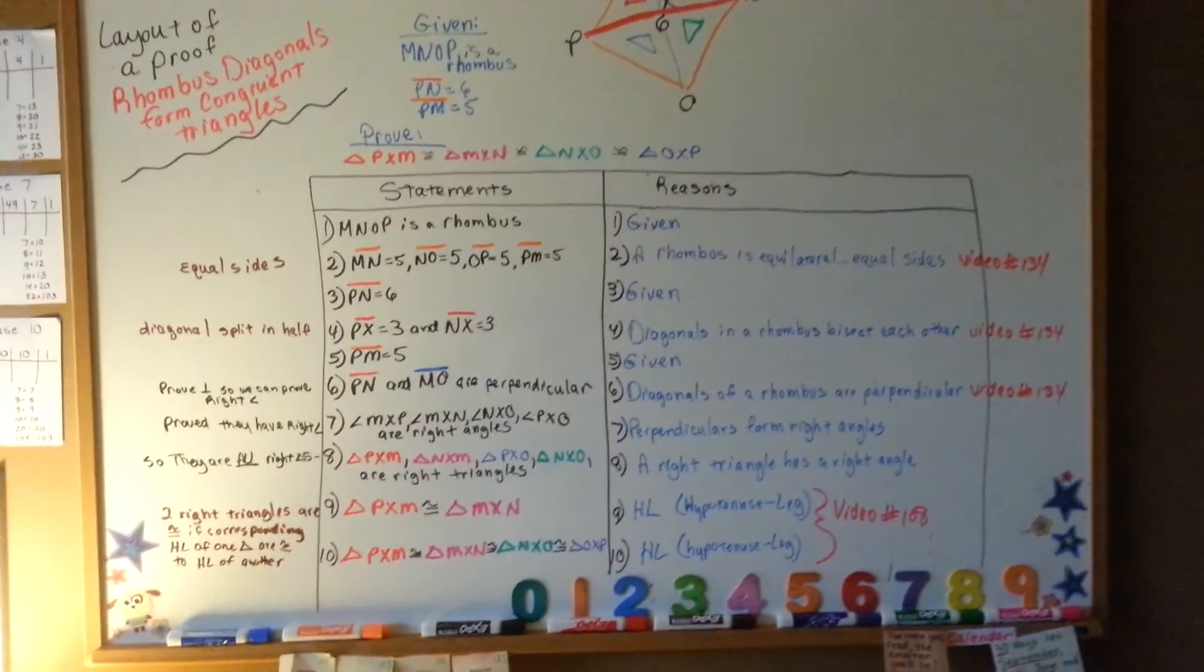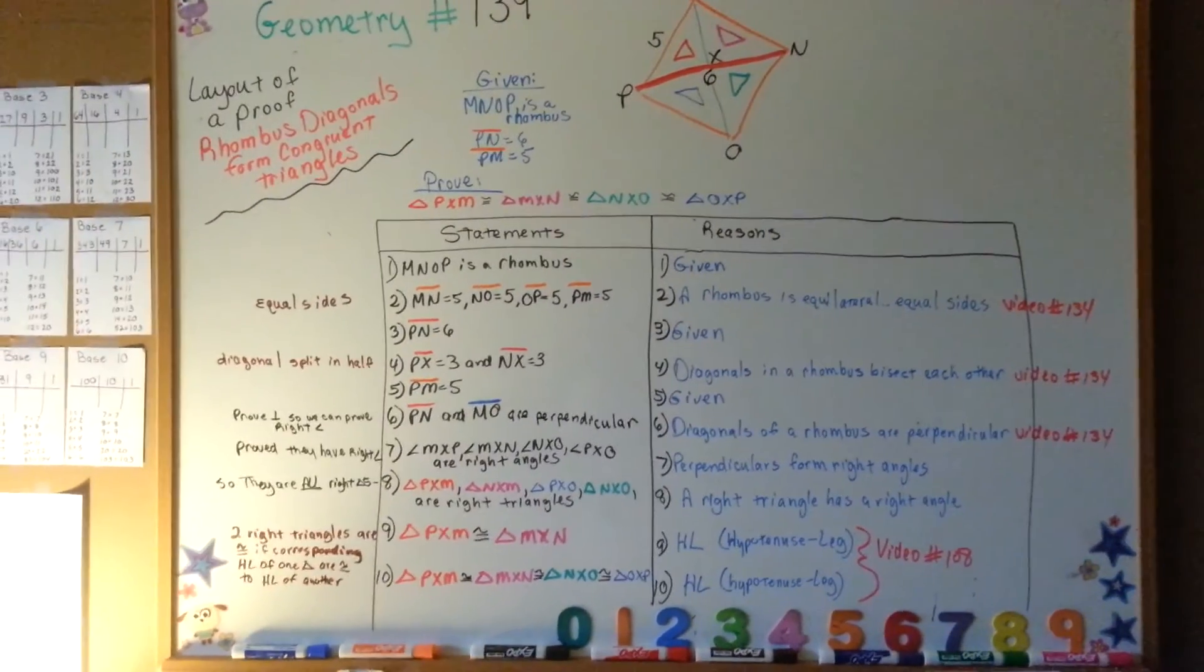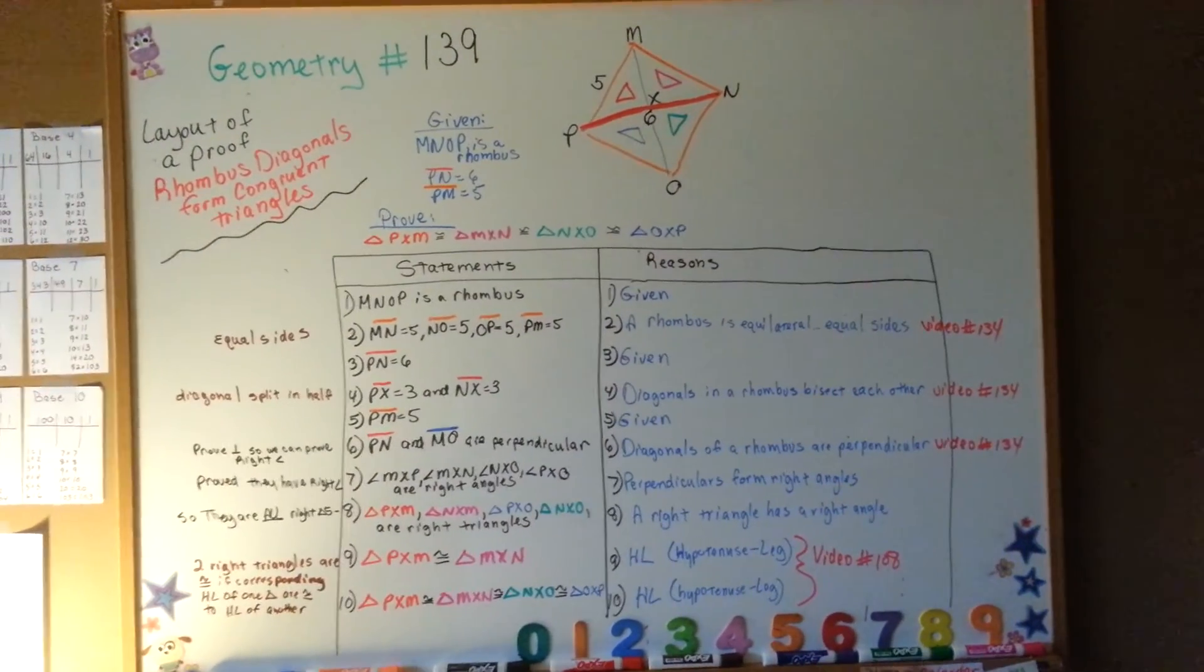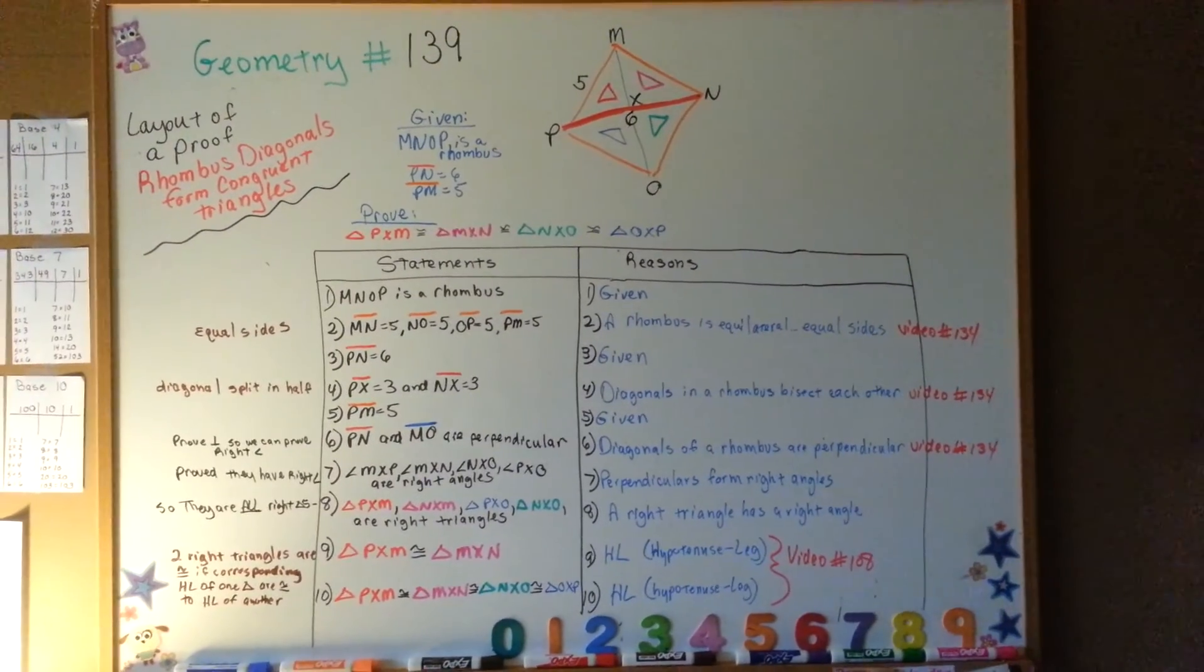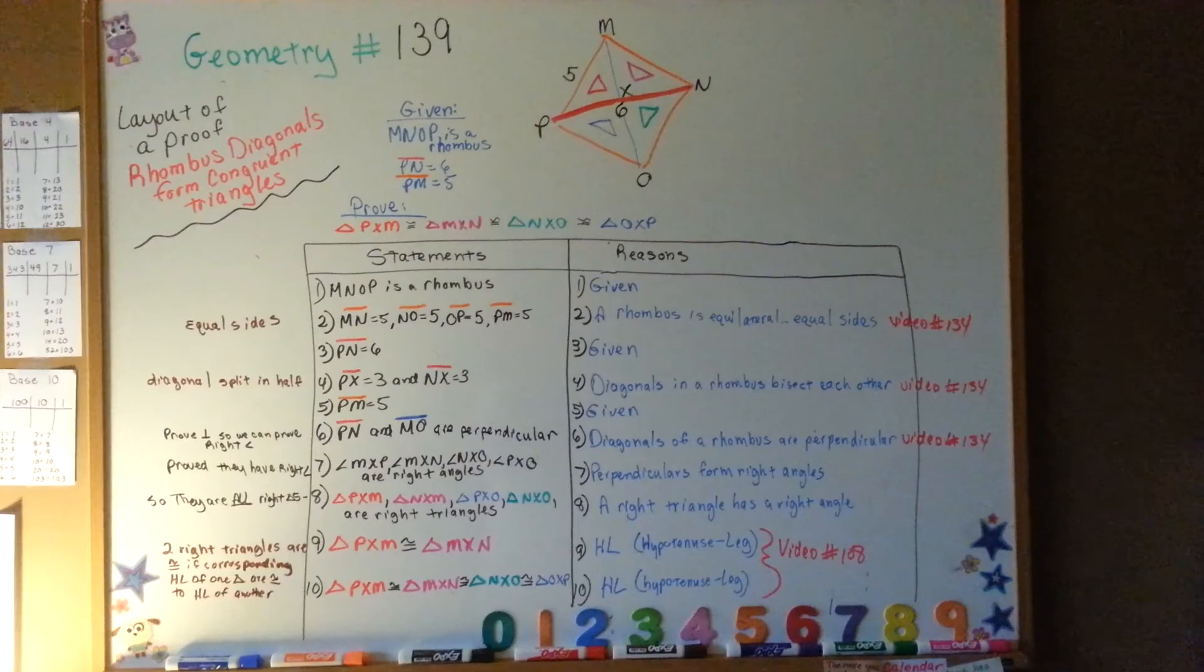So that is the layout of a proof for rhombus diagonals form congruent triangles. And our next one is going to be on formulas for the area of rhombus, rhombi. More than one is rhombi. I hope to see you there. Thank you.